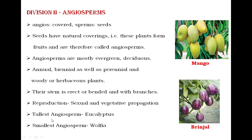The tallest angiosperm is Eucalyptus, reaching up to 100 meters in height. The smallest angiosperm is Wolffia, which is microscopic — even measured in millimeters. This means angiosperms range from microscopic to macroscopic. Examples of angiospermic plants include mango and brinjal — in both cases, seeds are covered by fruits and not visible with naked eyes.